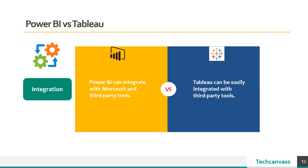The fifth parameter is integration. Power BI can easily integrate with different data sources and applications like SharePoint, Azure, Power Flow, Power Apps, Excel, and other tools. Tableau is used for a more scalable approach and can easily integrate with all Microsoft tools and other tools as well.